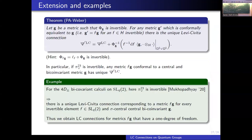I conclude with the example of SL_q(2). There, all the conditions for having a central bicoinvariant metric are satisfied. Taking an invertible element f, we have a Levi-Civita connection. With this, I thank you for your attention.